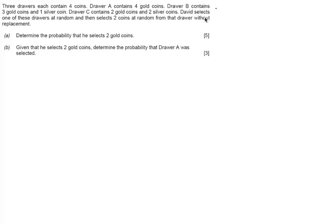We have three draws, each containing four coins. Draw A contains four gold coins. Draw B contains three gold coins and one silver coin. Draw C contains two gold coins and two silver coins. David selects one of these draws at random and then selects two coins at random from that draw without replacement.